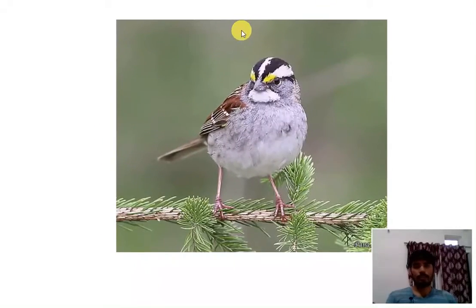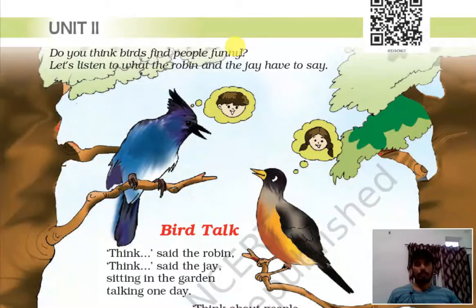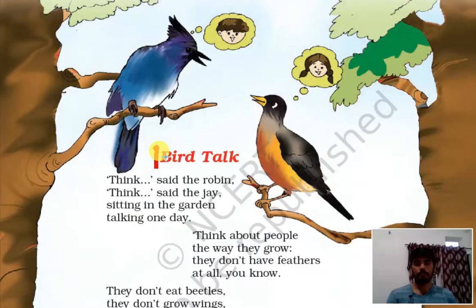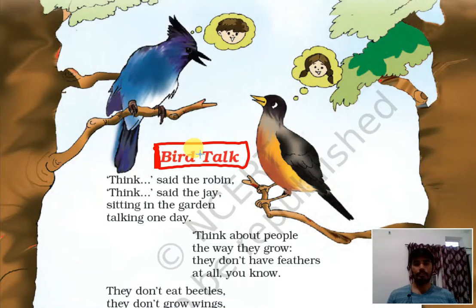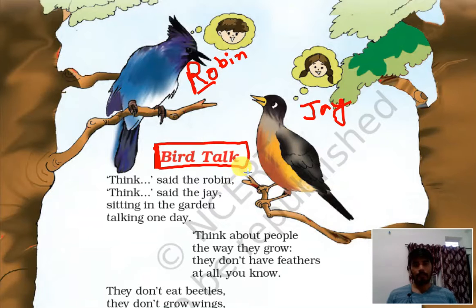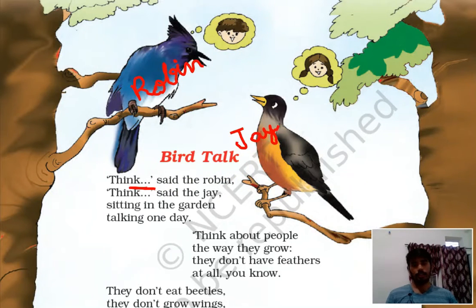Okay, let's start our topic. This is unit 2: Do you think birds find people funny? Let's listen to what the Robin and the Jay have to say. Robin and Jay are two birds talking to each other. The topic is Bird Talk — spelling: B-I-R-D, bird; T-A-L-K, talk. This is Robin and this is Jay.